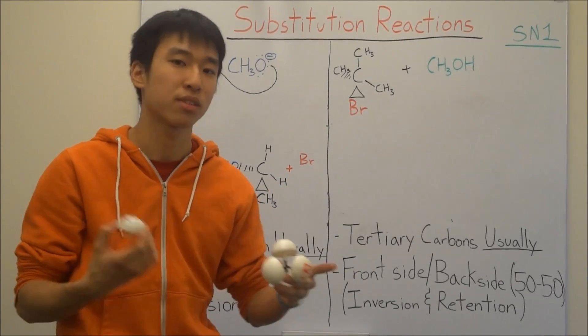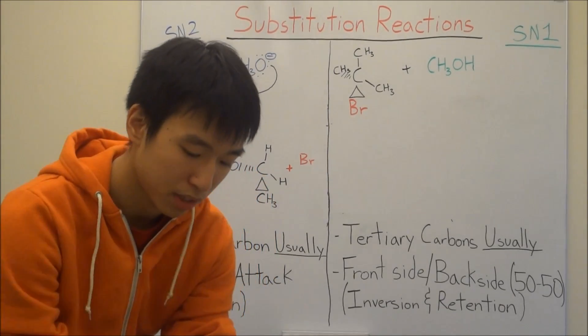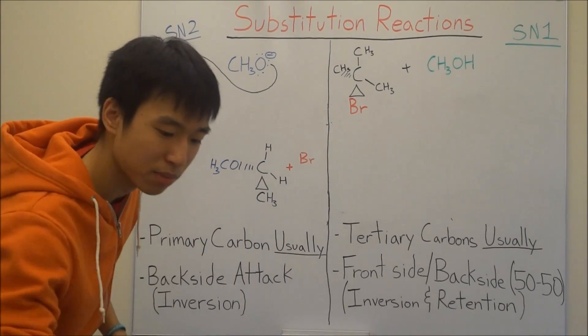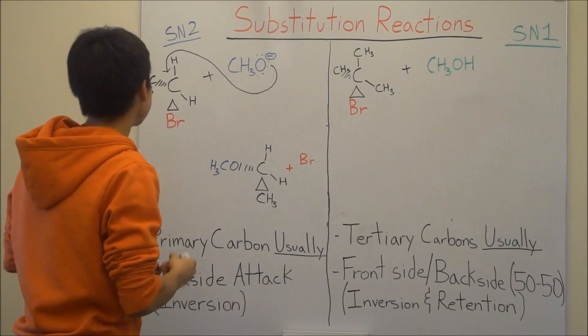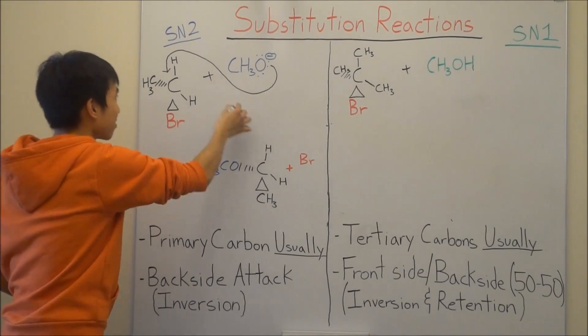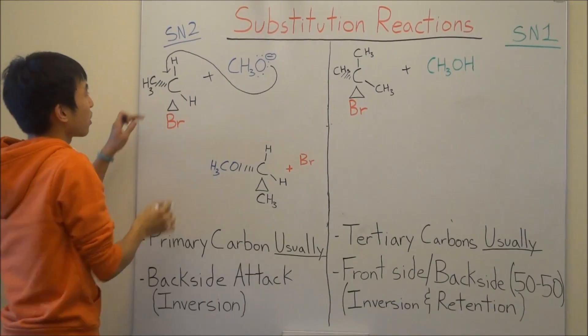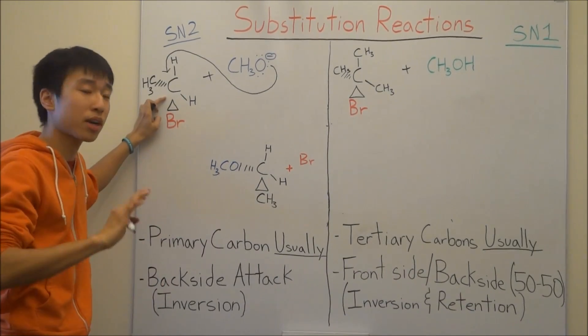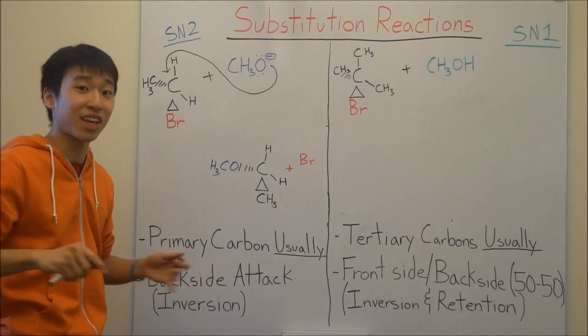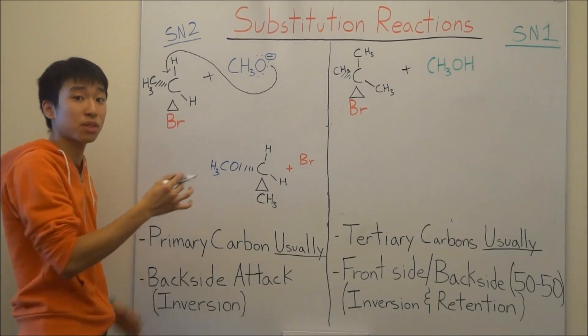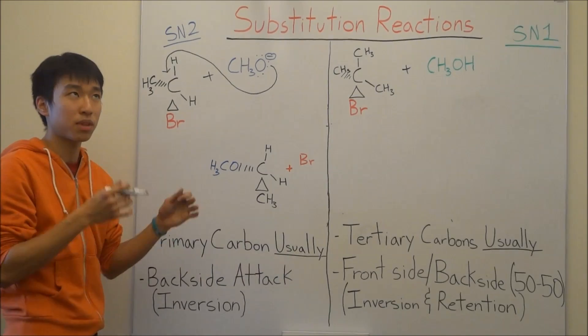Coming back to here, finish my mechanism. I hope you guys didn't all stop watching the video already. So yeah, your methoxide attacks from the back, and then carbon can only handle four bonds. So he's kind of like, holy crap, I have too many electrons. I can't handle all these electrons. I have to give up something. So who does he give up the electrons to?